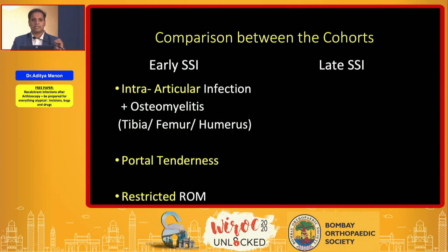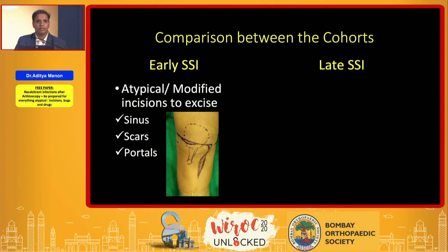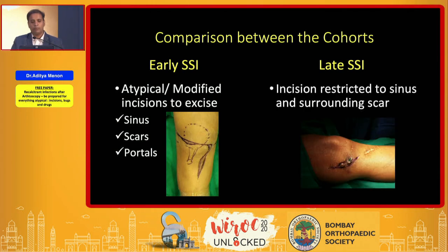There are certain classic differences between the two groups. The ones who had an early infection all had intra-articular involvement with portal side tenderness and adjoining osteomyelitis with a restricted range of movement. Whereas the late onset infections had only extra-articular osteomyelitis with no joint involvement and full range of movement. We had to resort to atypical or modified incisions in early infections to excise the discharging sinus, the portals, and the scars, whereas in late infections we could get away with local excision of the sinus and surrounding scar.